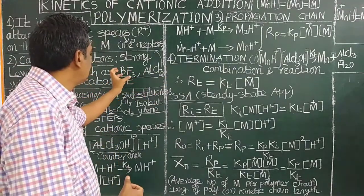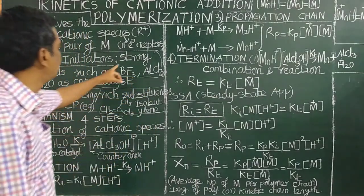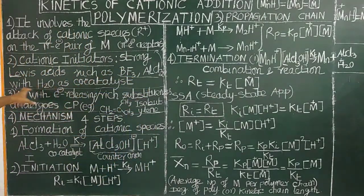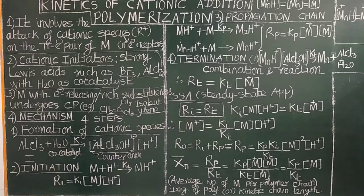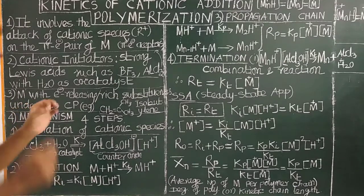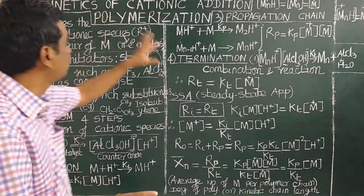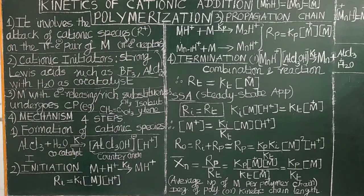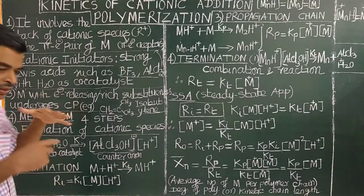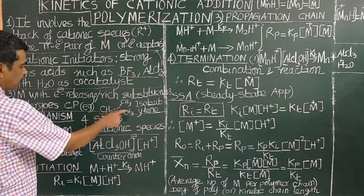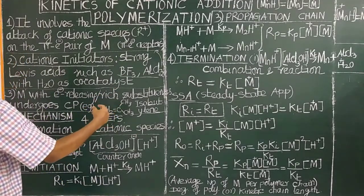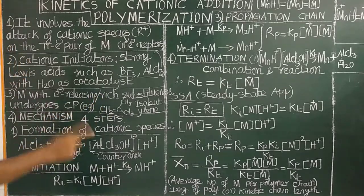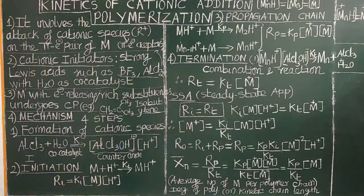BF3 is an electron pair acceptor — it accepts an electron pair to complete its octet. Water acts as a co-catalyst. Monomers with electron-rich substituents are able to undergo cationic addition polymerization. Only monomers possessing electron-releasing substituents undergo cationic addition polymerization.